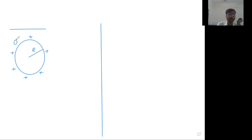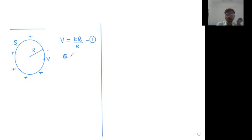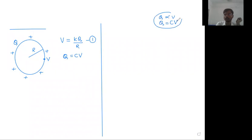The value of the charge is Q. Potential at a point on the surface of the conductor is KQ upon R. Now the R will be capital R because the point is on the surface. Call this equation number one. We all will remember the relation Q is equal to CV, because the fundamental equation we initially wrote was Q proportional to V, and the proportionality constant was introduced as C.